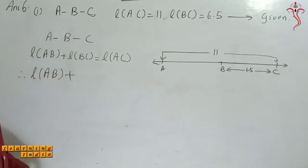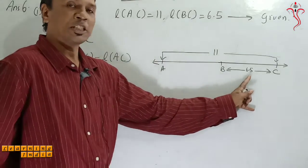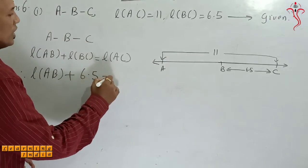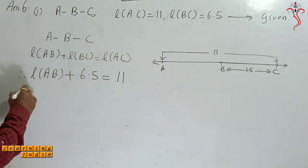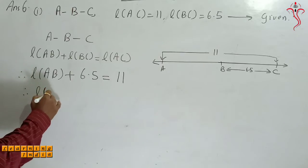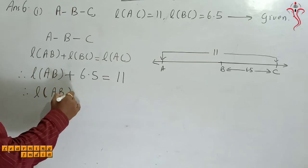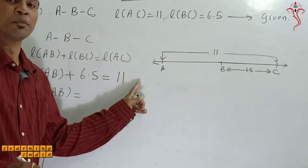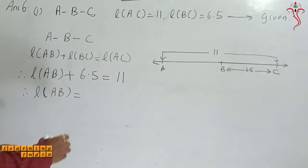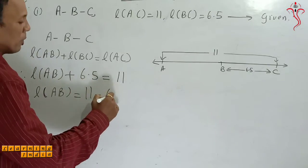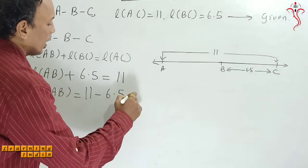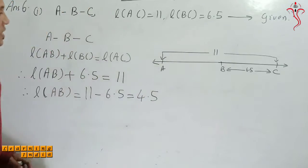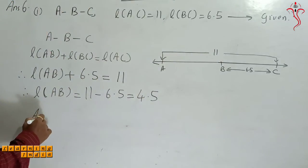Therefore plus BC ka value is 6.5, right? 6.5 is equal to 11. Therefore length AB is equal to, it goes to the right hand side, minus 6.5. So 11 minus 6.5 is equal to 4.5.